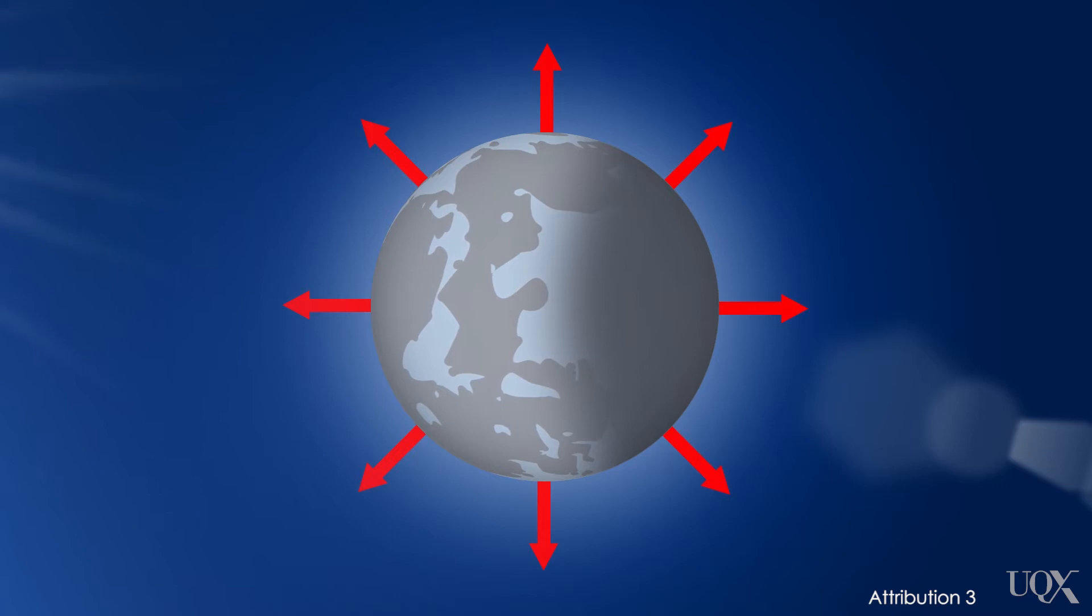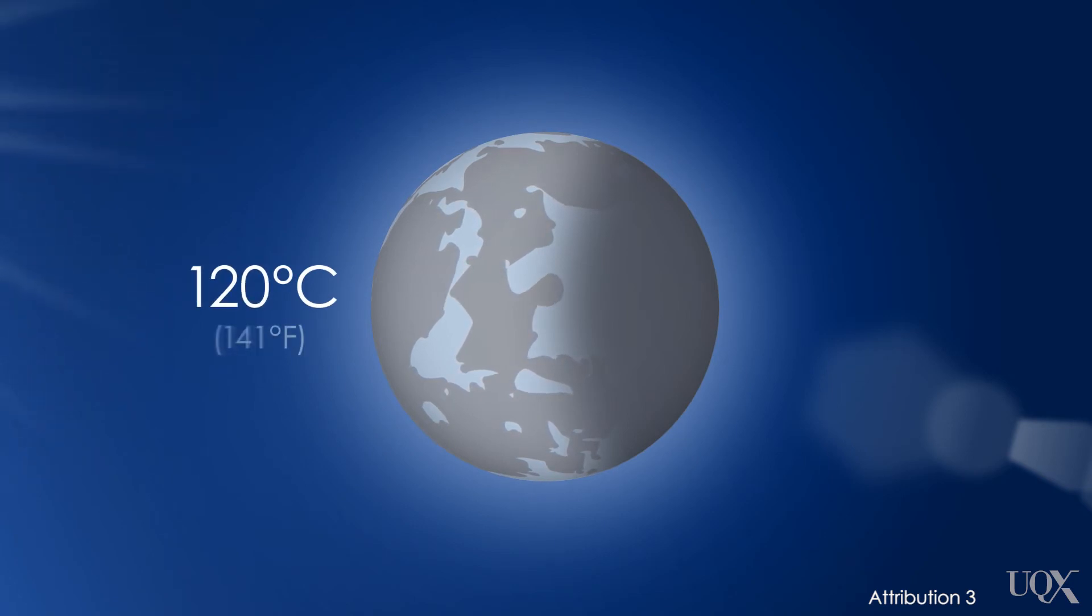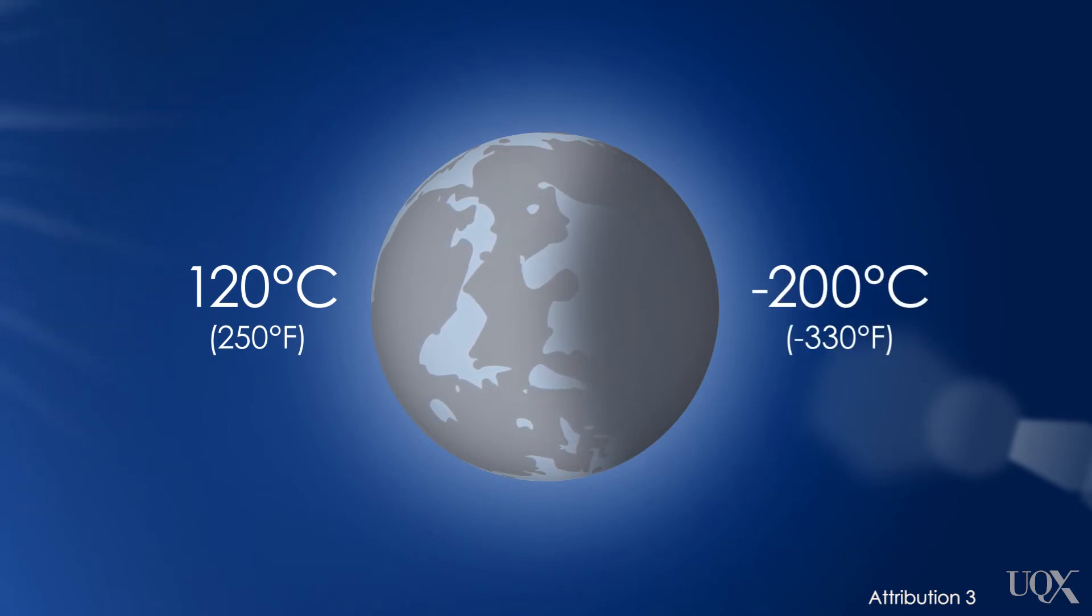As a result, the difference between day and night temperatures is extreme. Daytime temperatures on the moon reach 120 degrees Celsius or 250 degrees Fahrenheit. Nighttime temperatures fall below minus 200 degrees Celsius or minus 330 degrees Fahrenheit.